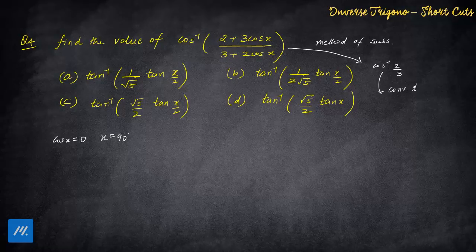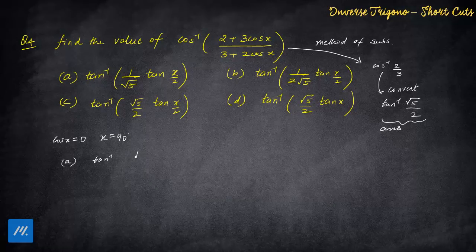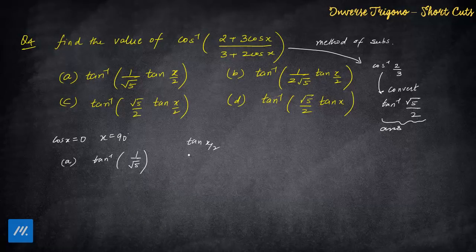Converting cos inverse(2/3) to tan inverse: complete the triangle — hypotenuse is 3, base is 2, so the answer is tan inverse(√5/2). Now substitute x = 90° into each option. For one option it becomes tan inverse(1/√5) × tan(45°) = tan inverse(1/√5) × 1, which doesn't match. Another option with tan(x/2) = tan(45°) = 1 also needs checking.